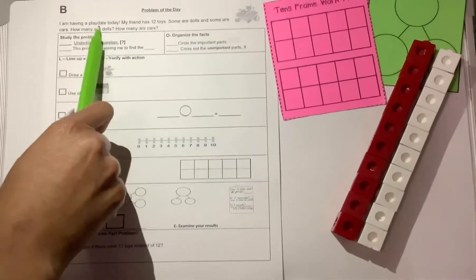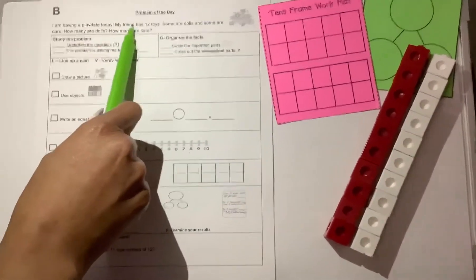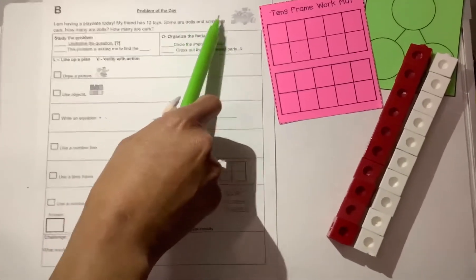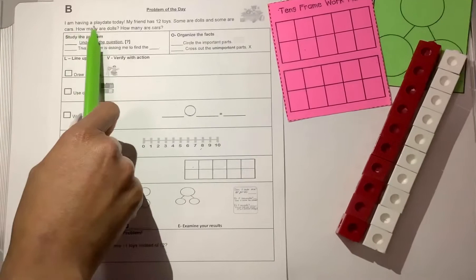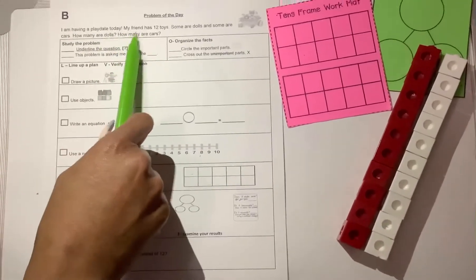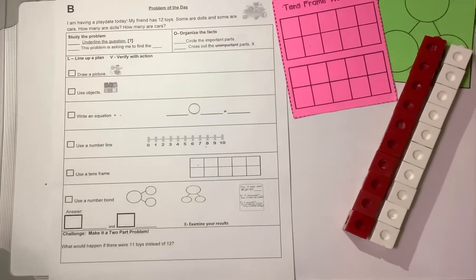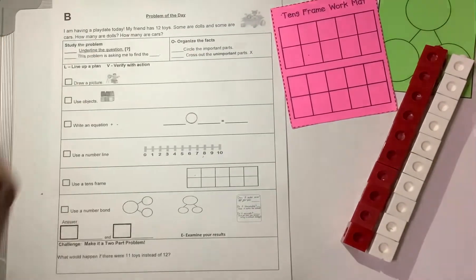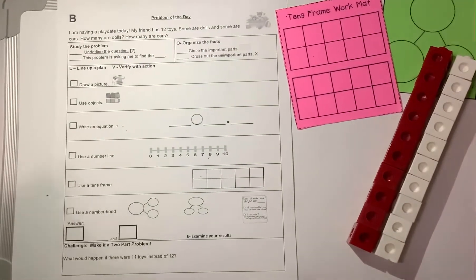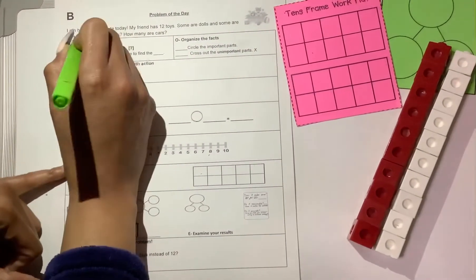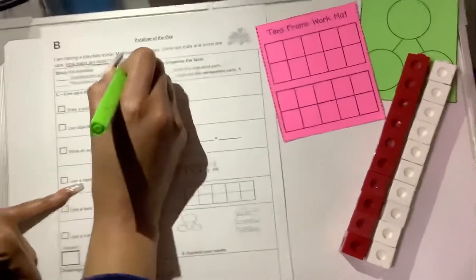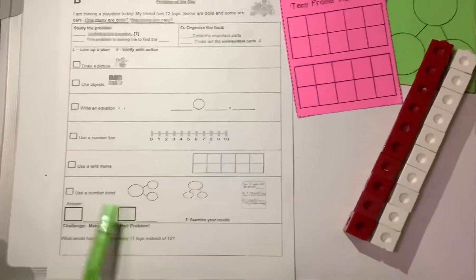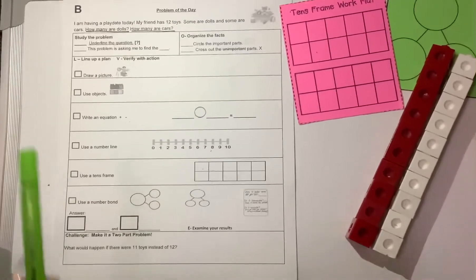I am having a play date today. My friend has 12 toys. Some are dolls and some are cars. How many are dolls? How many are cars? So remember boys and girls, when we do our problem of the day we need to underline the question, and in this problem we have two questions. How many are dolls and how many are cars? So remember you're looking for two answers and at the bottom you see two answer keys.